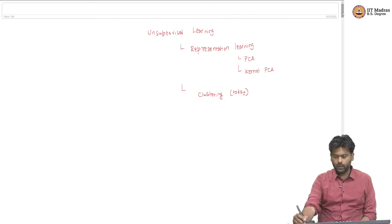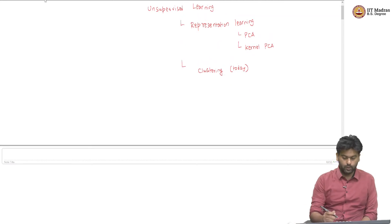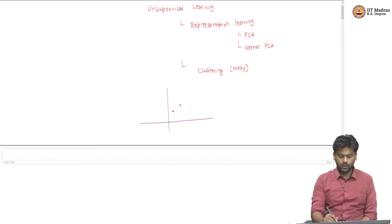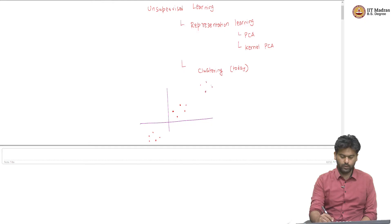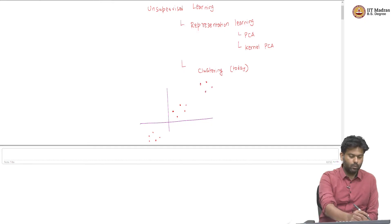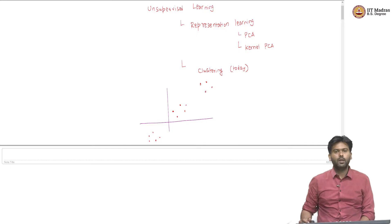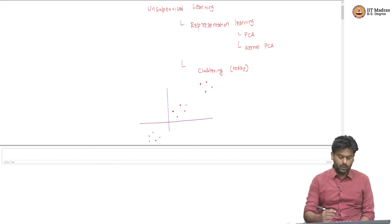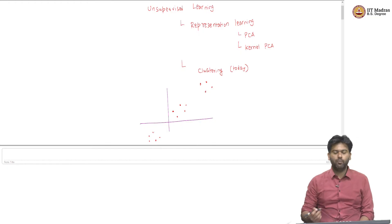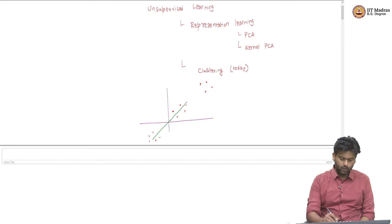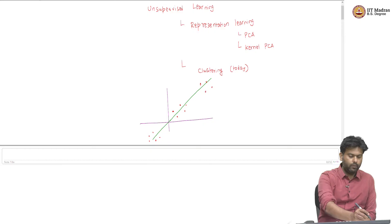So what is the motivation for looking at clustering? Let us take a simple two-dimensional picture and let us say we have a bunch of data points — some points here, some points here, and maybe some points here. One thing we could do to represent this data, in the way that we have seen so far, is to do a PCA on this dataset.